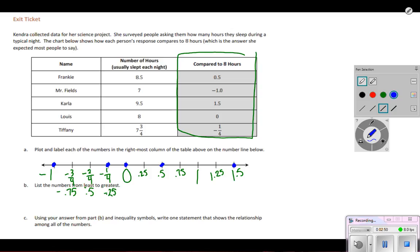So we have one, two, three, four, five dots on our number line. Perfect.